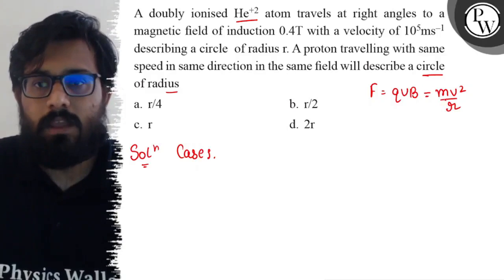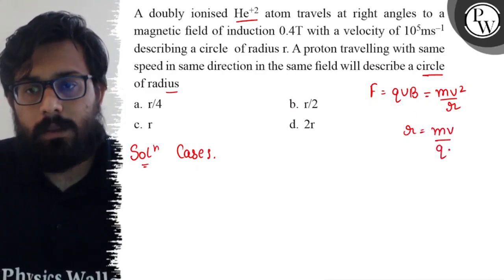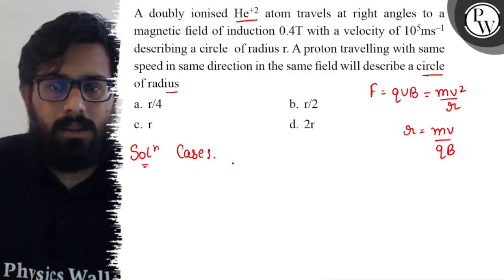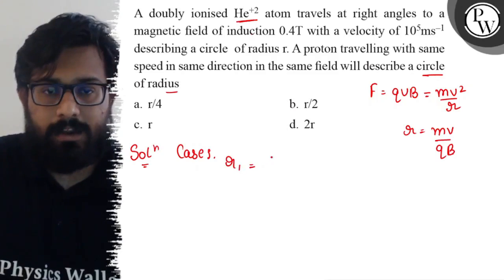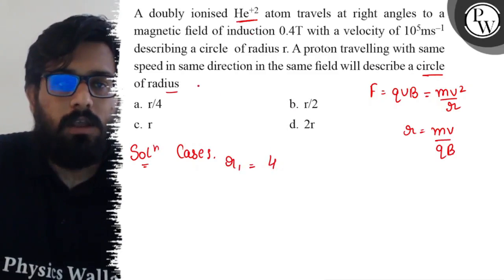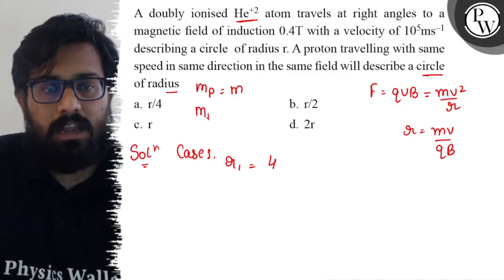So r1, for the case of the helium atom - the mass of the helium atom can be simply written as four times the mass of the proton. If the mass of the proton is m, the mass of the helium atom is 4m.